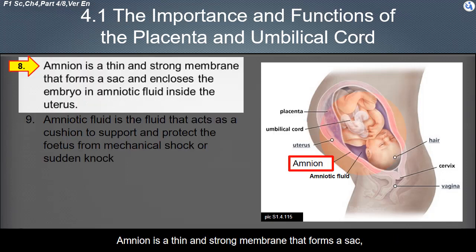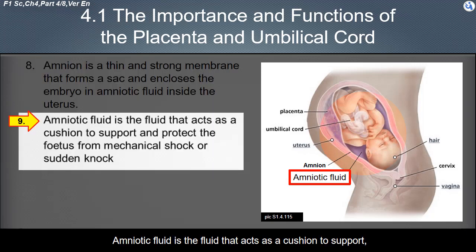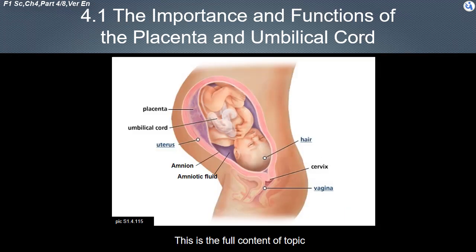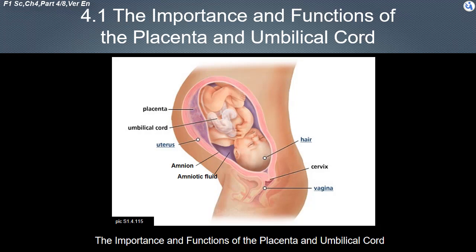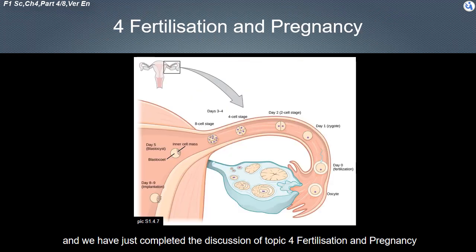The amnion is a thin and strong membrane that forms a sac and encloses the embryo in amniotic fluid inside the uterus. Amniotic fluid is the fluid that acts as a cushion to support and protect the fetus from mechanical shock or sudden knock. This completes the discussion of the importance and functions of the placenta and umbilical cord, and the topic of fertilization and pregnancy.